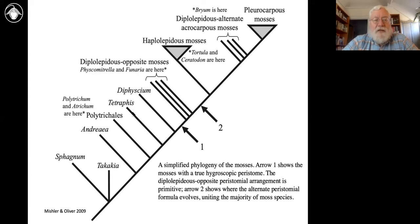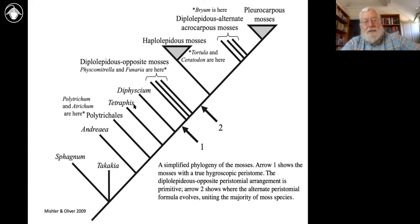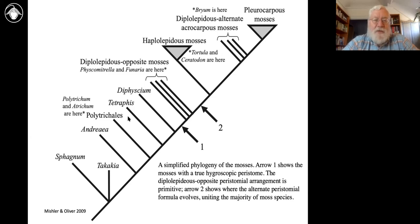Tetraphis you can find in some of the redwood forests. Robin Kimmerer — one of the best popular books on mosses — is called 'Gathering Moss.' It's a wonderful book. She's a biologist who is both a Native American who appreciates the uses and traditional status of plants, and also a scientist. She did a lot of work on Tetraphis, has a bunch of scientific papers on it — very interesting work on trade-offs between gemmae and spores. And now the two big groups of mosses that I referred to earlier...